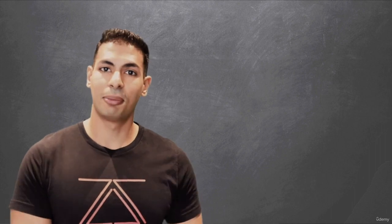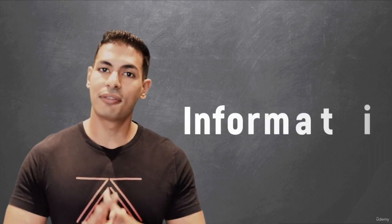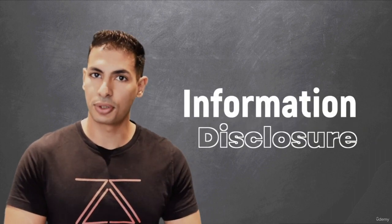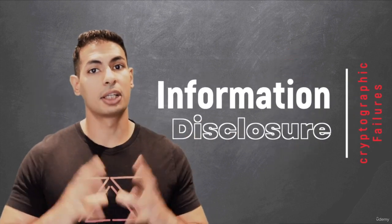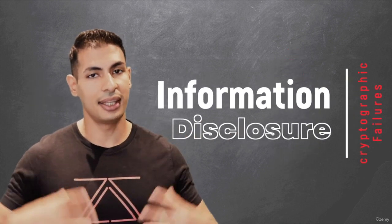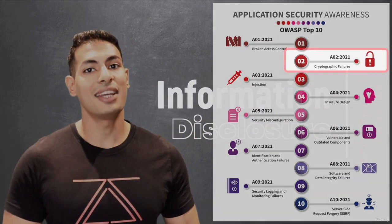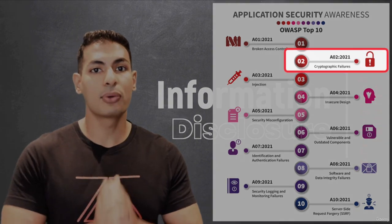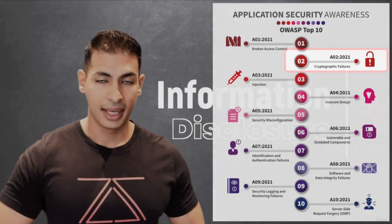The first bug or vulnerability that we're going to cover is information disclosure. This falls under the cryptographic failure category in the OWASP top 10, which is the second most common security threat.